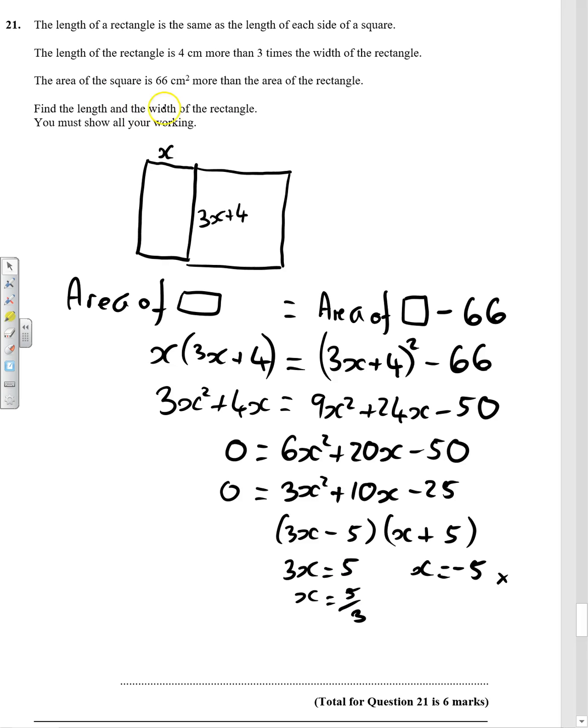What are we actually answering? The length and the width of the rectangle. Make sure you always answer the actual question. So it is 5 over 3. And then we have to do this dimension here. So we need to do 3 times 5 over 3 plus 4. Well, we end up with 9. So the dimensions are 9 centimeters and 5 thirds centimeters, 6 marks. And we've shown all the steps there.